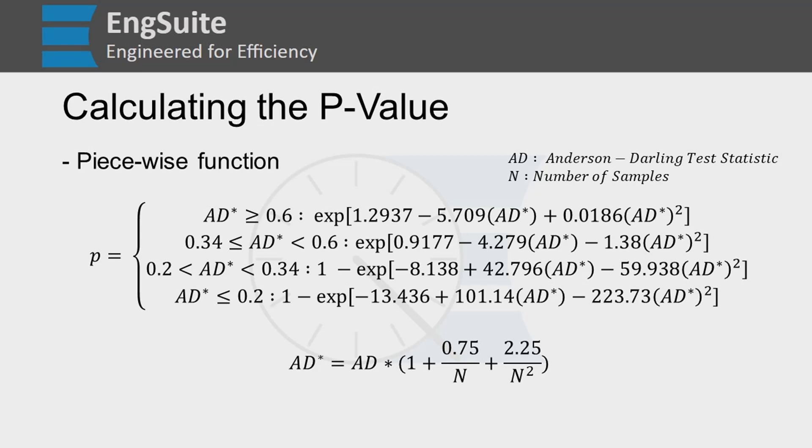If the AD star is greater than or equal to 0.34 but less than 0.6, then we use the second function here. Again, replacing our value for AD.